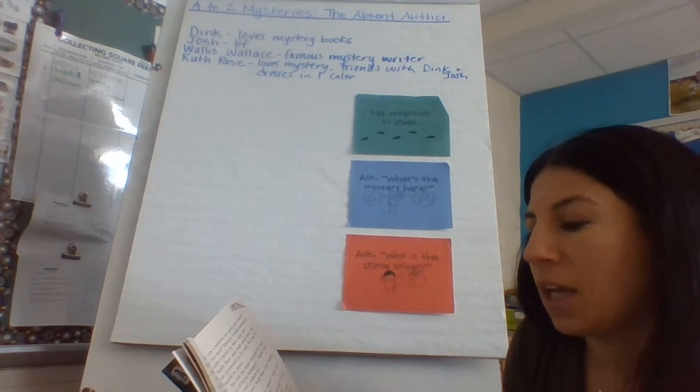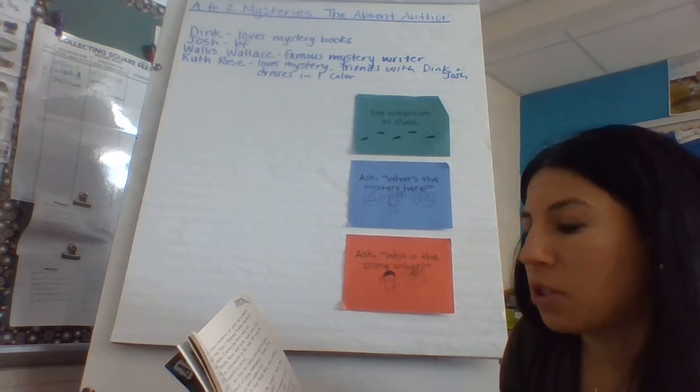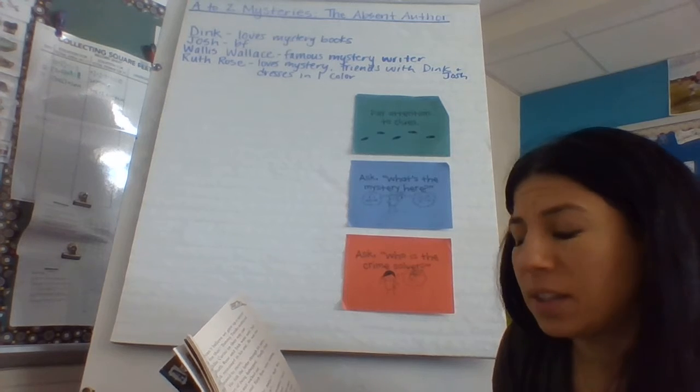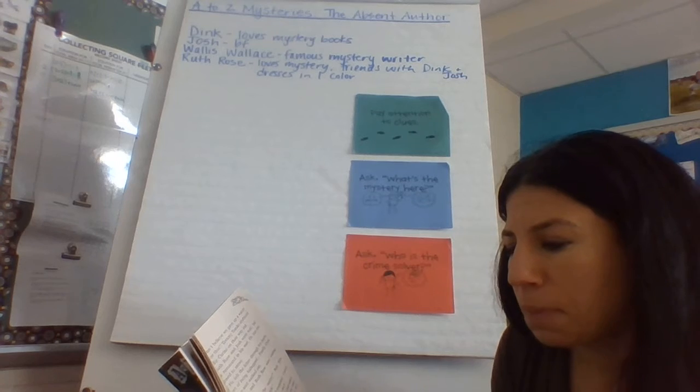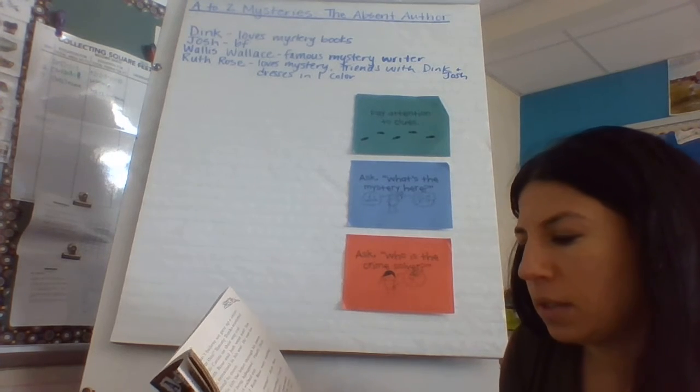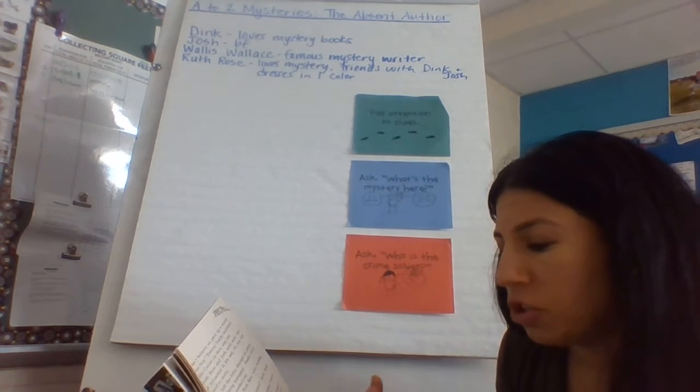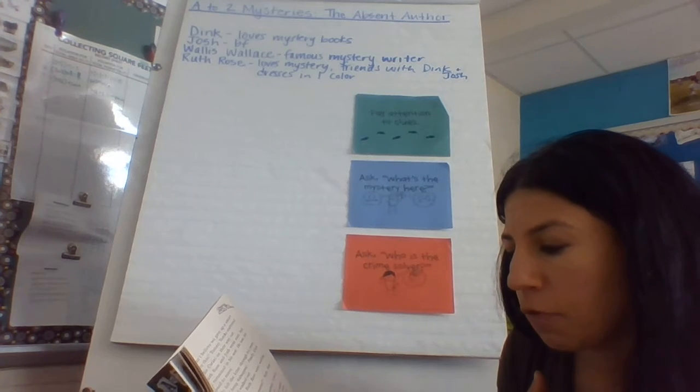Mr. Paskey stood again, but this time he wasn't smiling. I'm sorry, kids, he said, but Wallace Wallace doesn't seem to be coming after all. The kids groaned. They got up, scraping chairs and bumping knees. Mr. Paskey apologized to them as they crowded past, heading for the door.